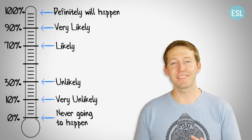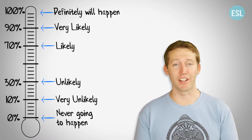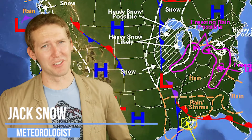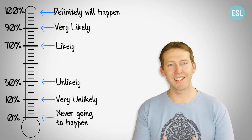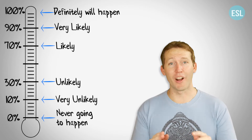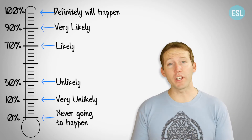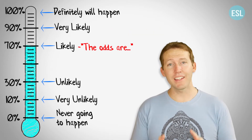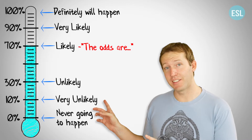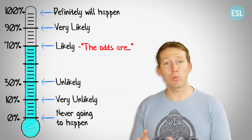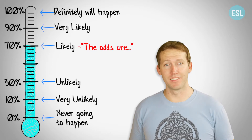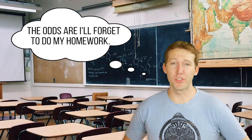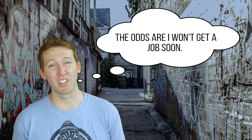But first, let's take a look at the basic expression: 'the odds are.' The odds are it'll rain tomorrow, which means it will probably rain. So if we go to our scale, our basic expression 'the odds are' is about 70%. It is likely — it will probably happen. The odds are I'll forget to do my homework. The odds are I won't get a job soon.